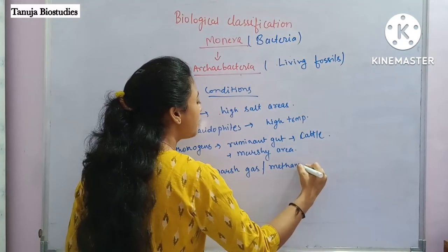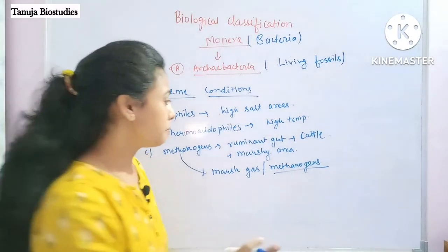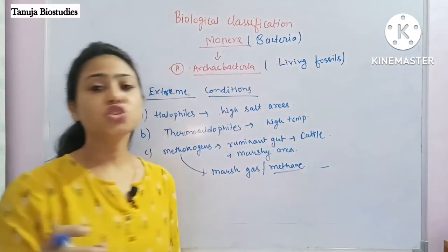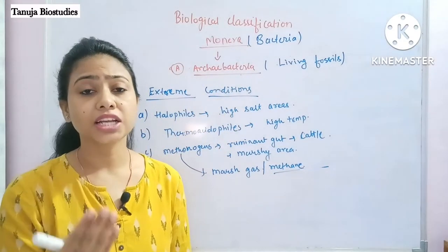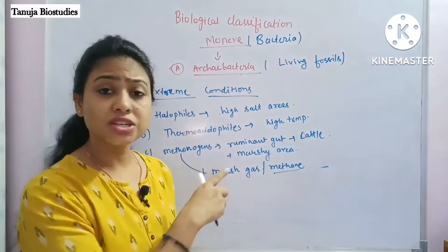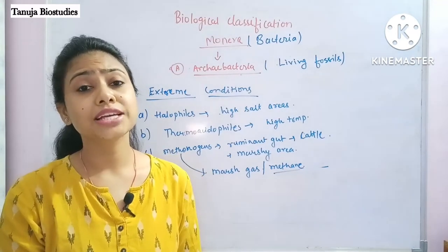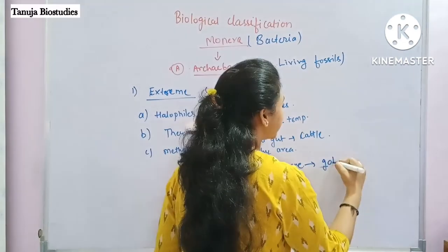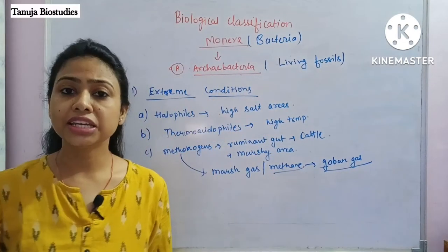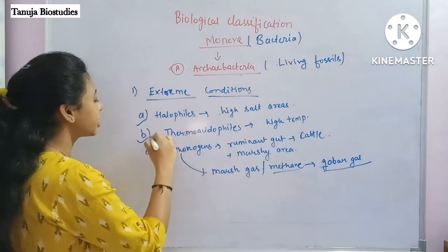A third category is methanogens, found in the ruminant gut of cattle and also in marshy areas. They are responsible for generating marsh gas, which is methane. Because methanogens are present in cow dung, cattle dung is utilized for making gobar gas — essentially methane gas used as a fuel.